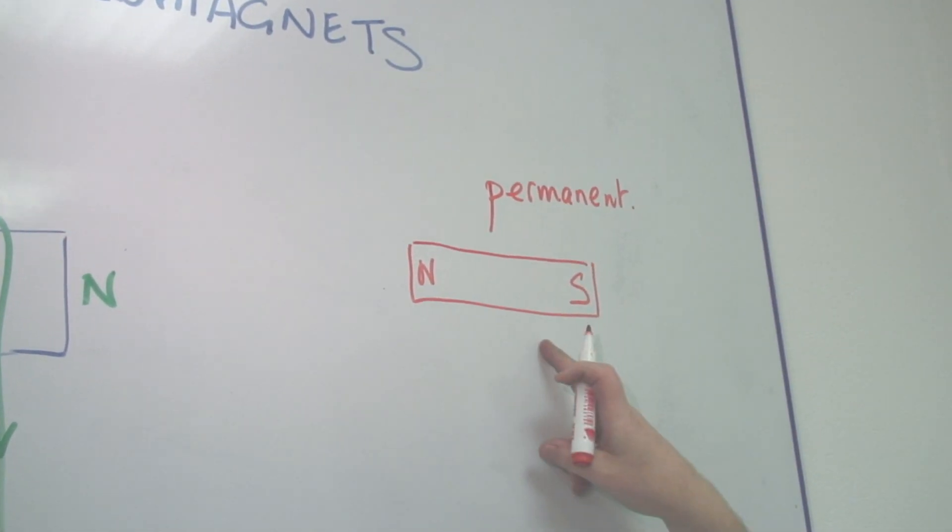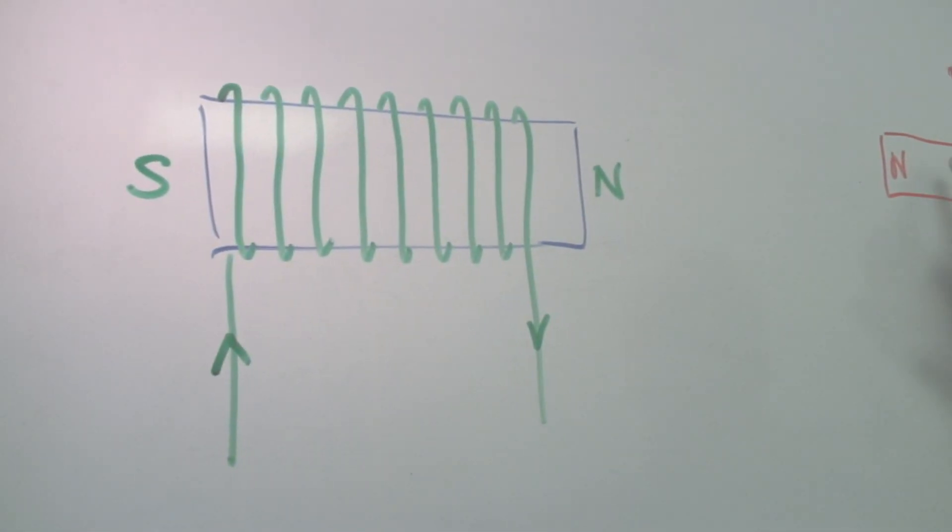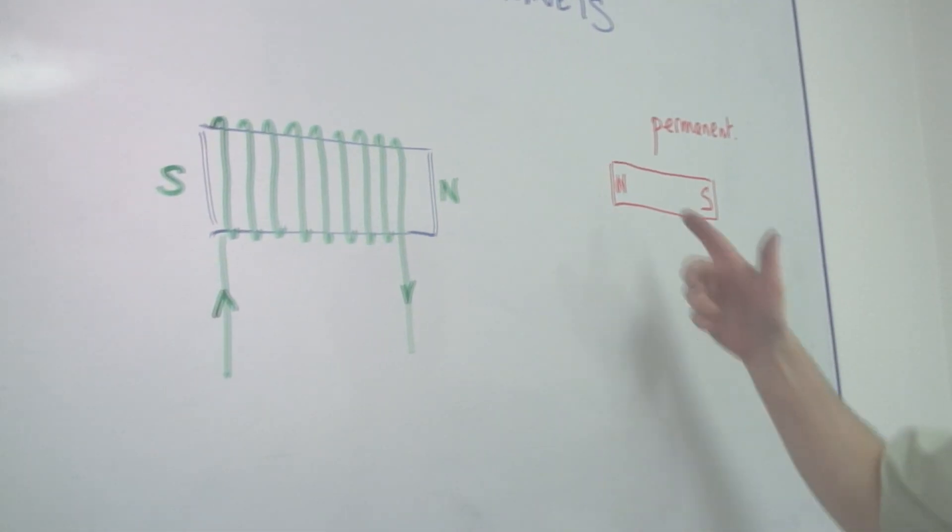Now, it has disadvantages. So the electromagnet is in a sense exactly the same as a permanent magnet. It has a north and a south.